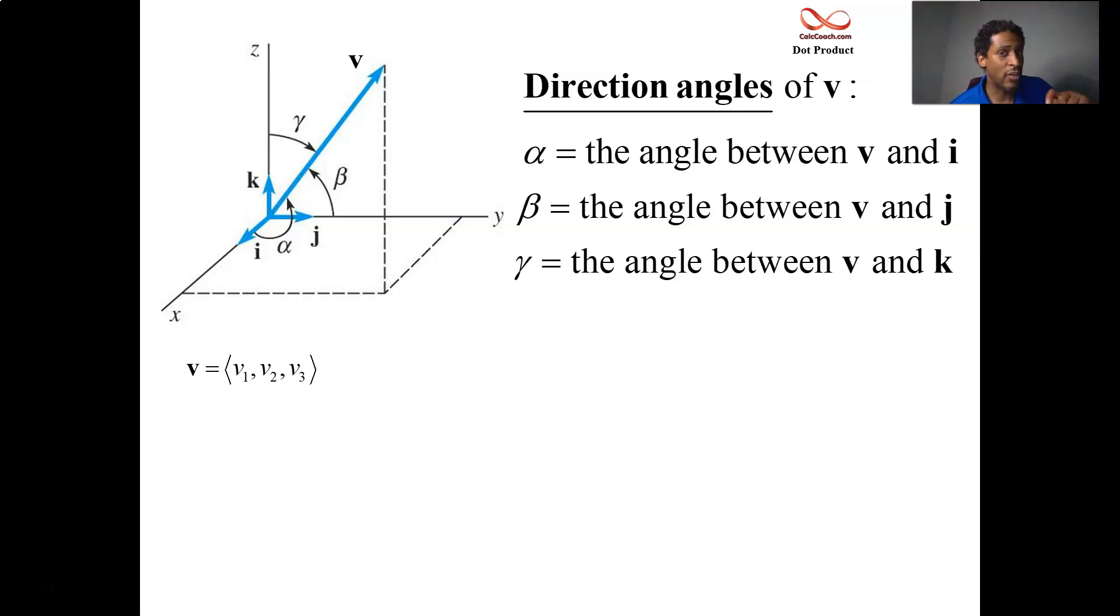Remember the formula for the angle between two vectors? It's that the cosine of that angle is equal to the fraction of the dot product divided by the product of the magnitudes. So if we're going to find the angle that we make with i, alpha, well, we know that magnitude of i is 1. We know that the component form of i is 1, 0, 0.